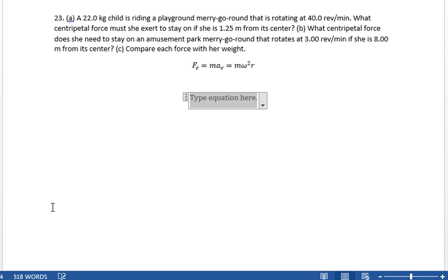So what do we know here? We know the mass is 22 kilos. We know that the radius is 1.25 meters, and we have omega is 40.0 revolutions per minute.